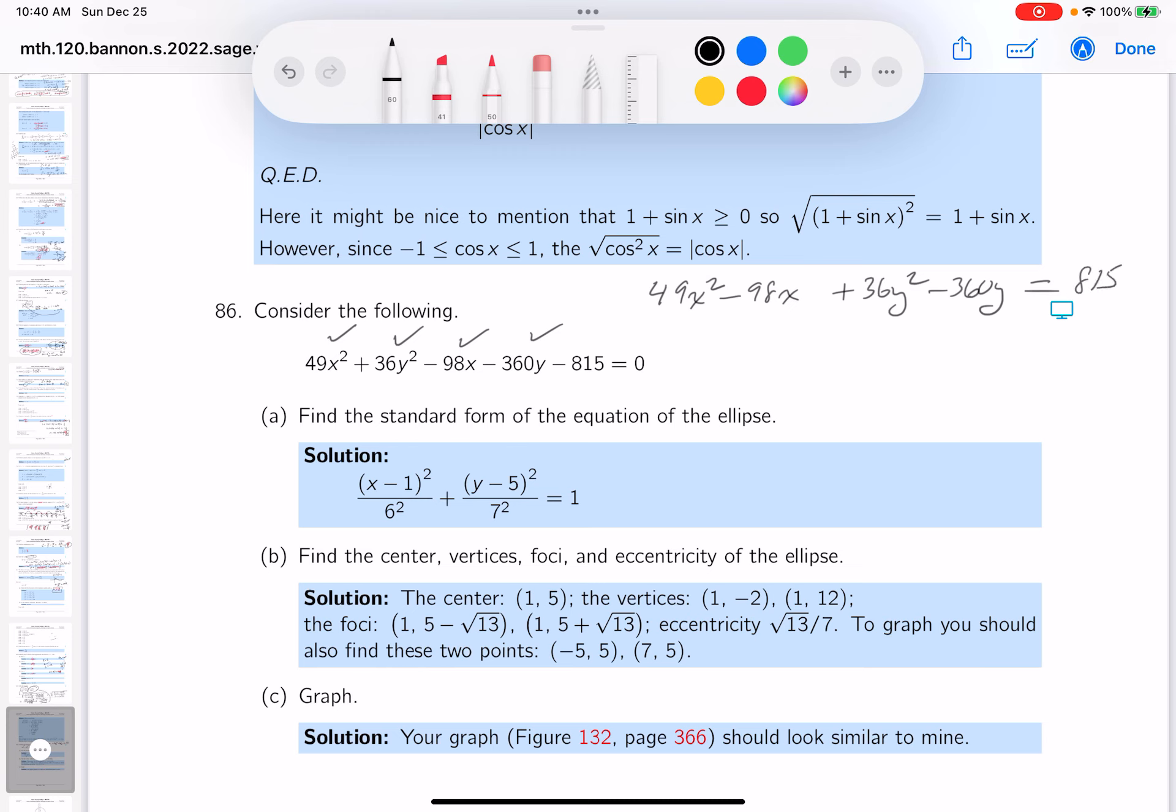I'm going to factor out 49 from the first two terms, and you get 49 times x squared minus 2x. I'll leave a little space there. Factor 36 out over here, and you get y squared minus, let's see, that would be 10. I'll leave a little space there, and then I get 815.